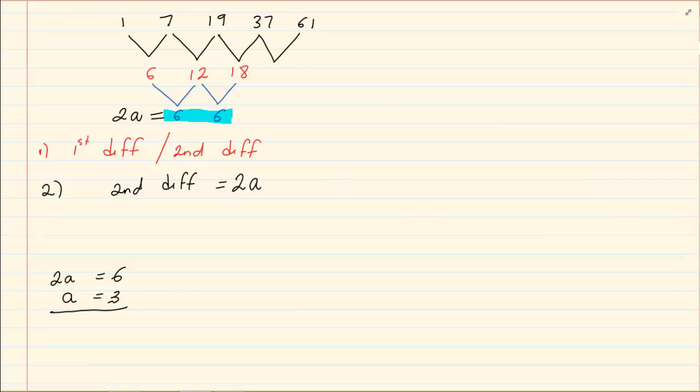Once you've solved the second difference and you've solved for a, the next step is to go where you calculate the first difference. So at the first difference we're going to make it equal to 3a plus b. So what we're going to do here is we're going to say 3a plus b is equal to 6. Then you're going to solve for b.